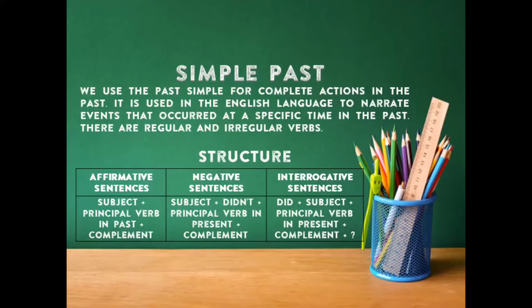Structure. Affirmative sentences: subject, principal verb in past, complement. Negative sentences: subject, didn't, principal verb in present, plus complement. Interrogative sentences: did, subject, principal verb in present, complement, and question mark.